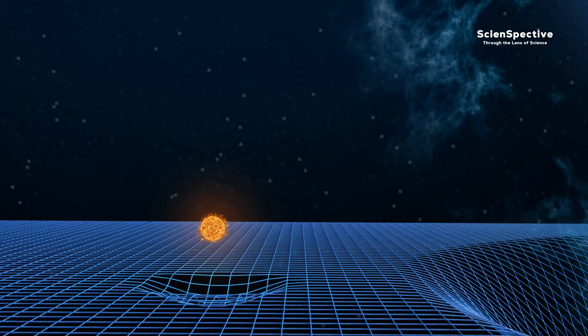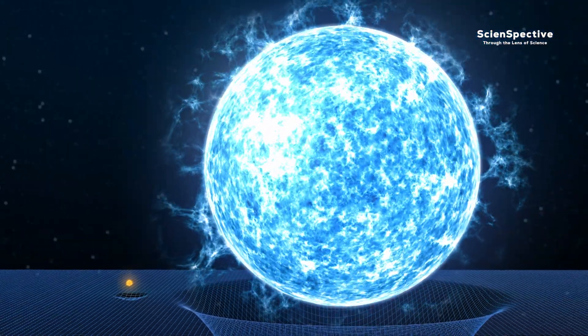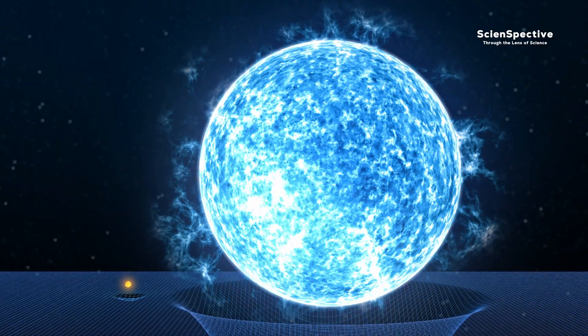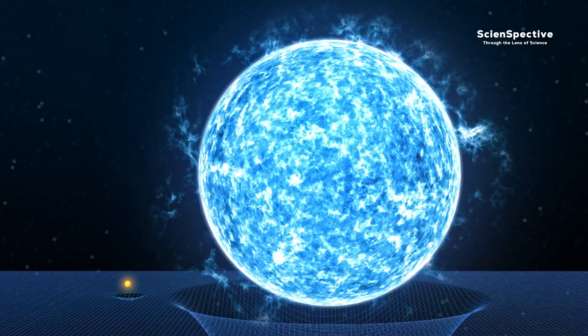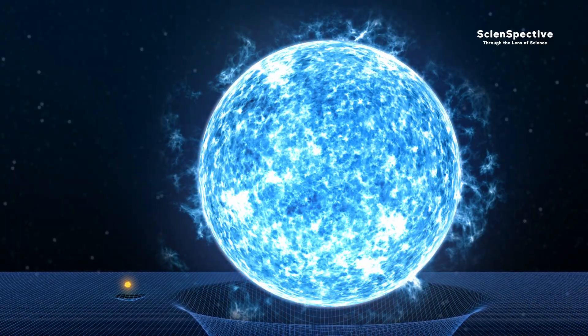It's a completely different story for much more massive stars. These giant stars, due to their mass, have immense gravity, causing extremely intense fusion in their cores. In just a few hundred million years, they burn through most of their hydrogen.